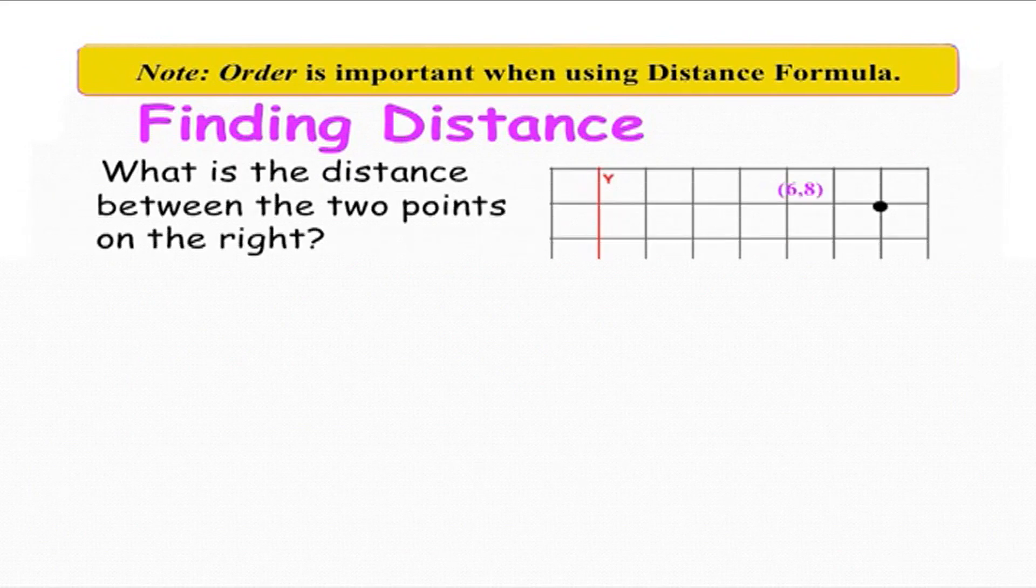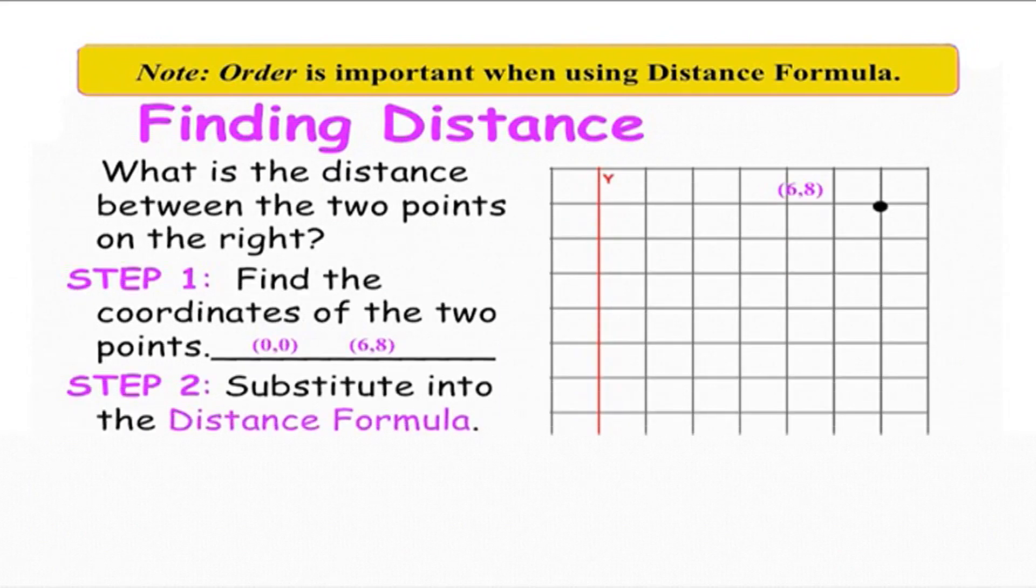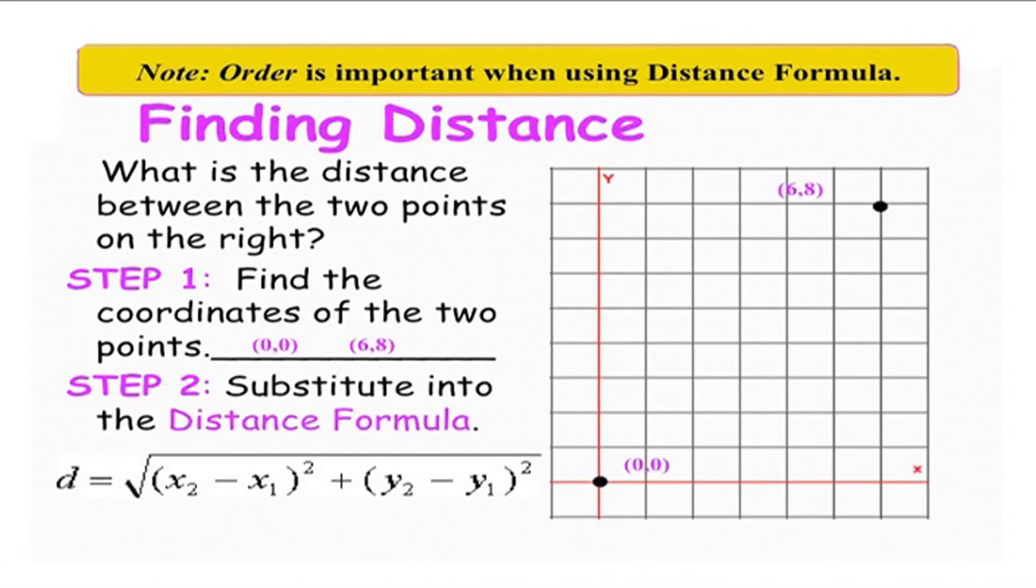Finding distance. What is the distance between the two points on the right? Find the coordinates of the two points as they are (0, 0) and (6, 8), then substitute it into the distance formula, which is equal to square root of (x₂ minus x₁) whole square plus (y₂ minus y₁) whole square.